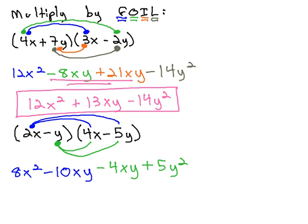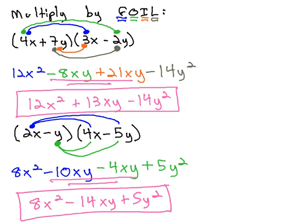Now, we can look to find like terms, which we have in the middle again. We now have 8x squared minus 14xy plus 5y squared for our final solution.